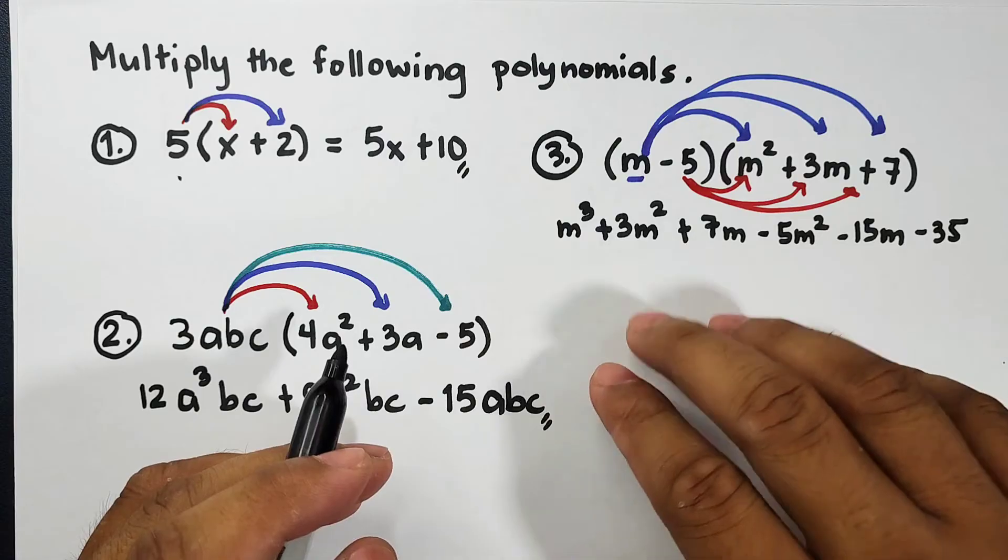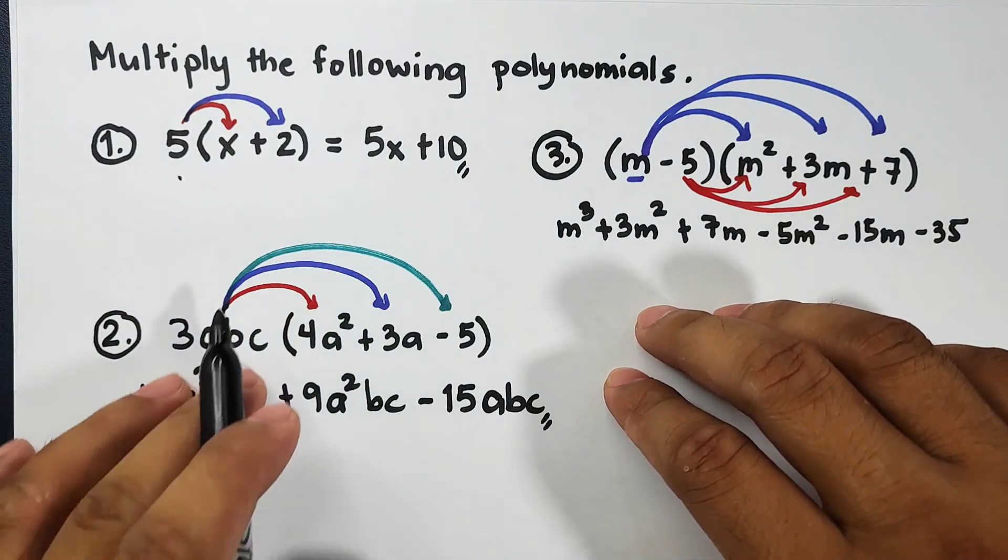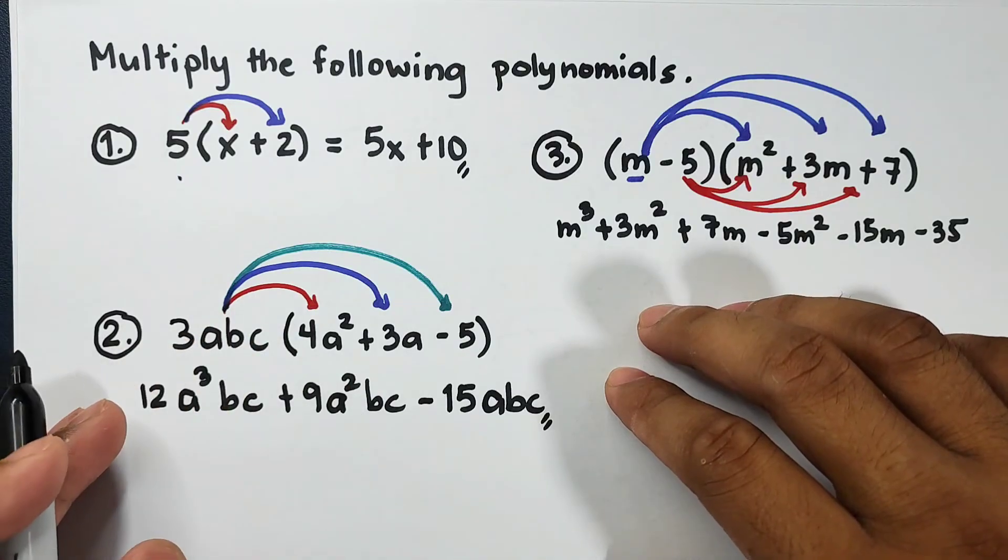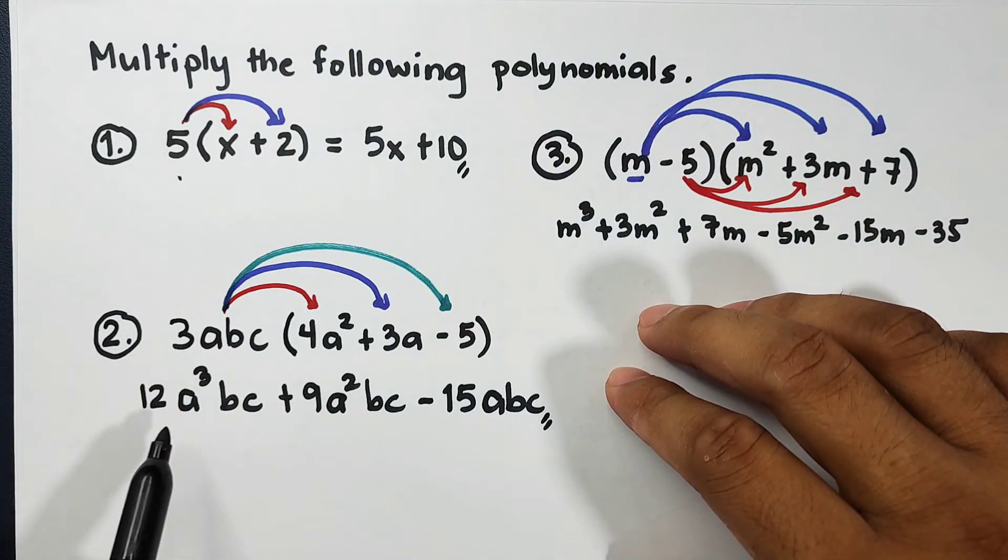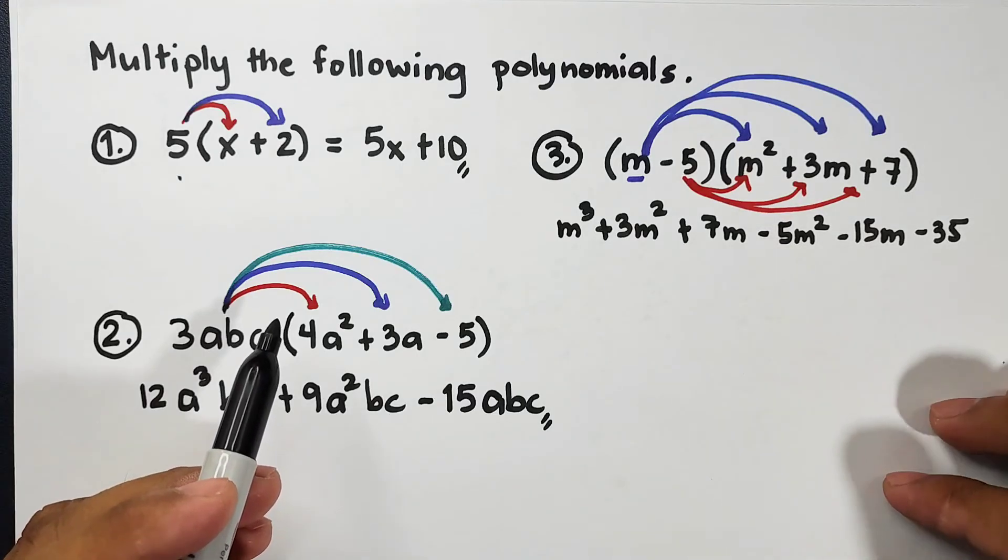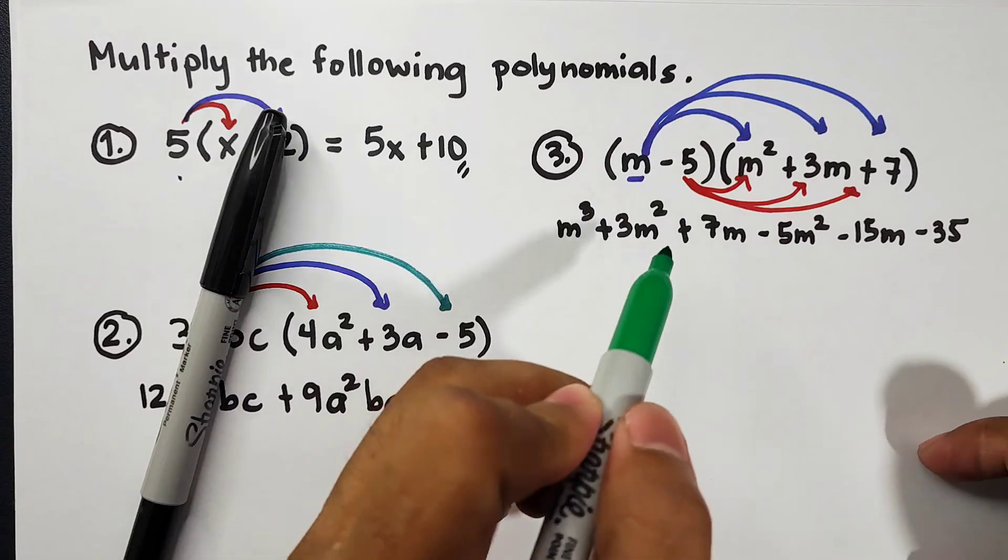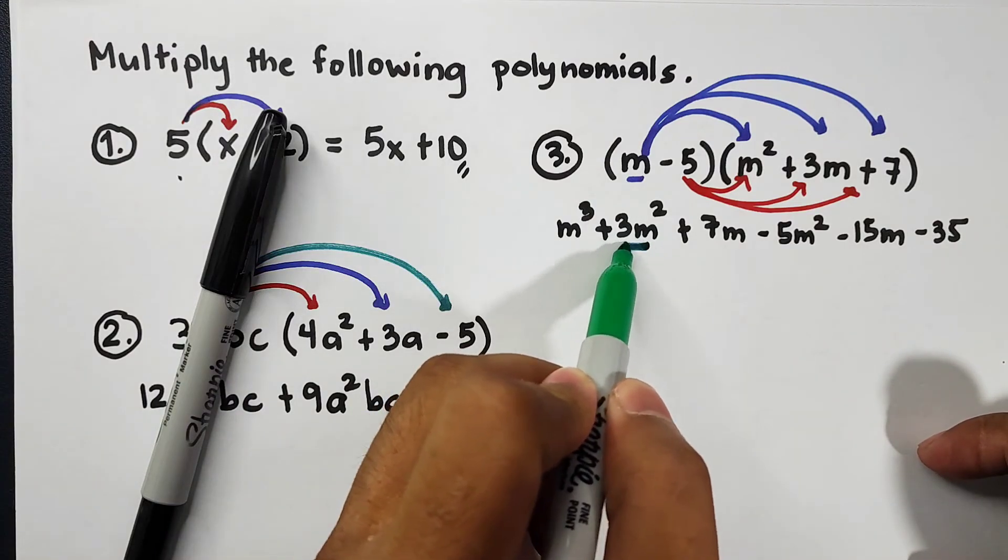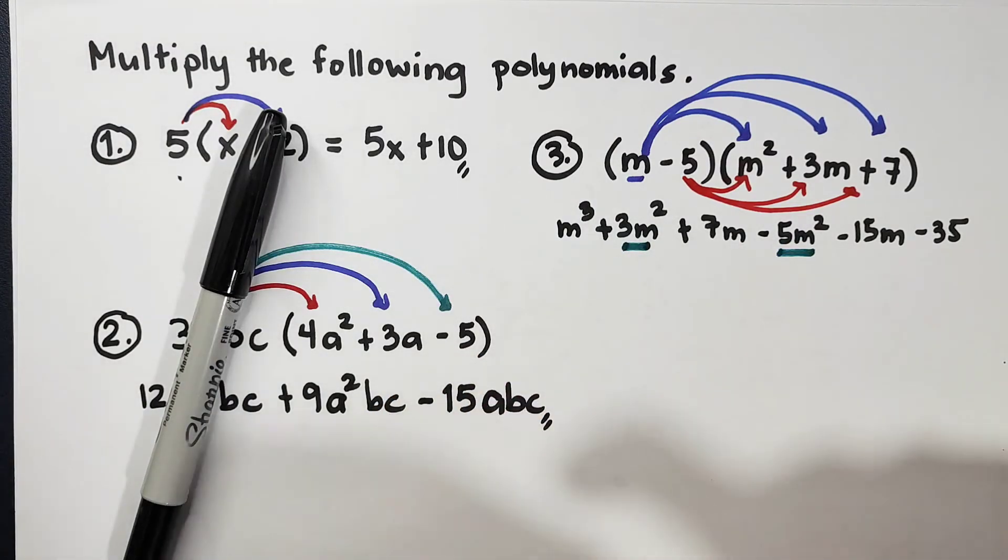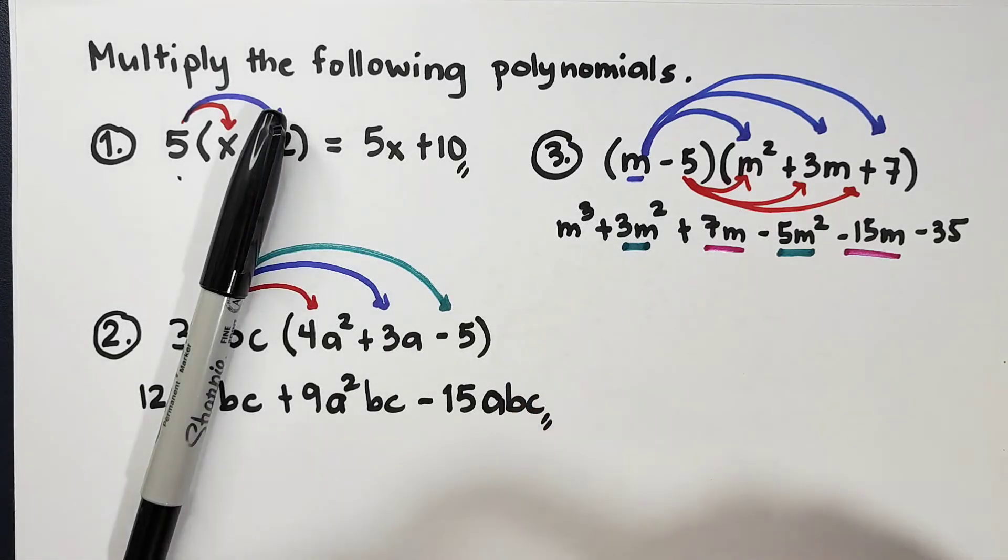From examples number one and number two, after distributing the terms outside, there was nothing to combine. But here we will have combining like terms. If you notice, we have like terms, and another like terms is 7m and negative 15m.